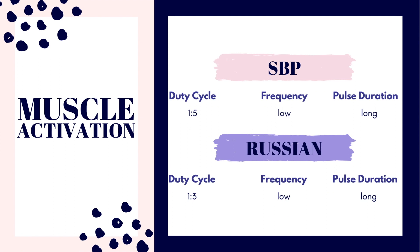For Russian e-STEM, the beat frequency is around 50 hertz, with the pulse duration being about 200, and again still that low frequency. It's just a different type of e-STEM.